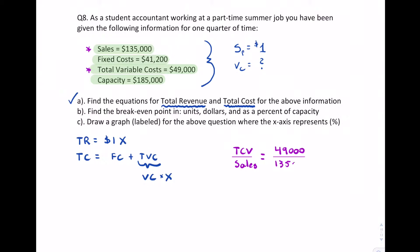That ratio is forty-nine thousand divided by one hundred thirty-five thousand, which gives us approximately zero point three six two nine six three.